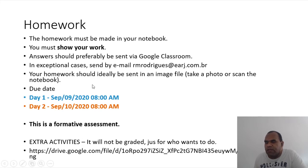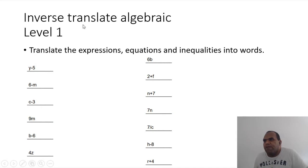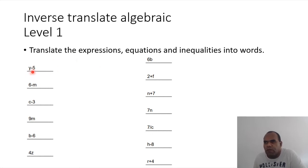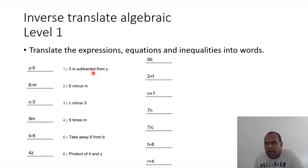Here, as you can see, you have the interactivity tool. I've planned it for you — you can reach out and find everything you need. The first one: inverse translate algebraic. Let's do it together using a laser pointer — translate the expressions, equations, and inequalities into words. Right now, math into words. The first ones are: y minus 5, 6 minus m, c minus 3, 9m, b minus 6, and 4z. As you can see, I have the answer keys.